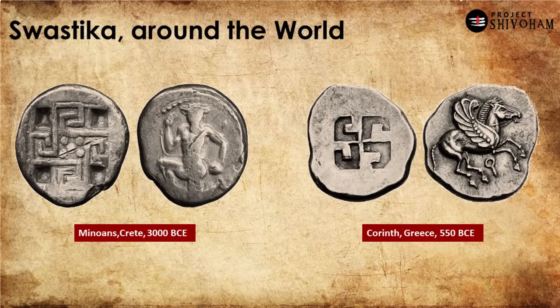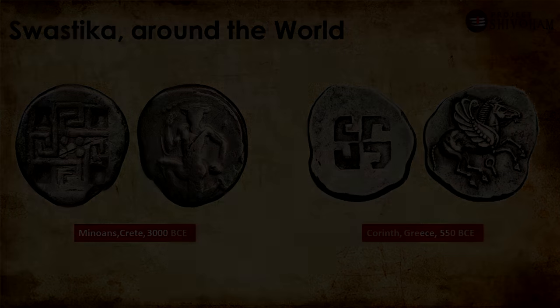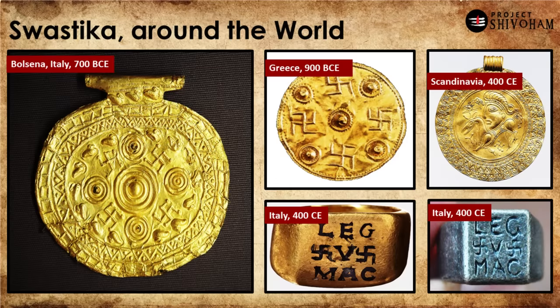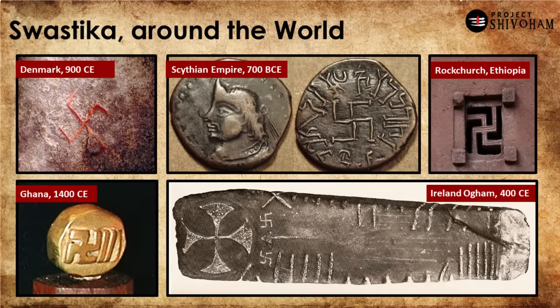Swastika is also found on coins of ancient civilizations like the Minoan civilization, which is older than the Greek civilization, and in Greece itself on certain coins dating as far back as 550 BC. Swastika is also found on ornaments in ancient civilizations that thrived in Eurasia — from Italy to Scandinavia, at least 2,000 to 2,500 years ago — currently on display in different museums, having swastika as part of their aesthetics. Like this, swastika has been found across Europe, Asia, and Africa, with some traces in the Americas as well.